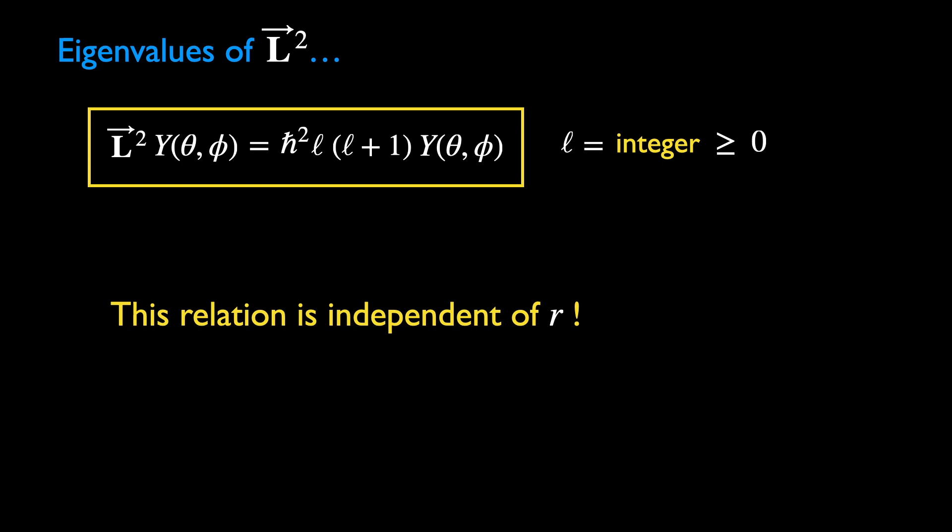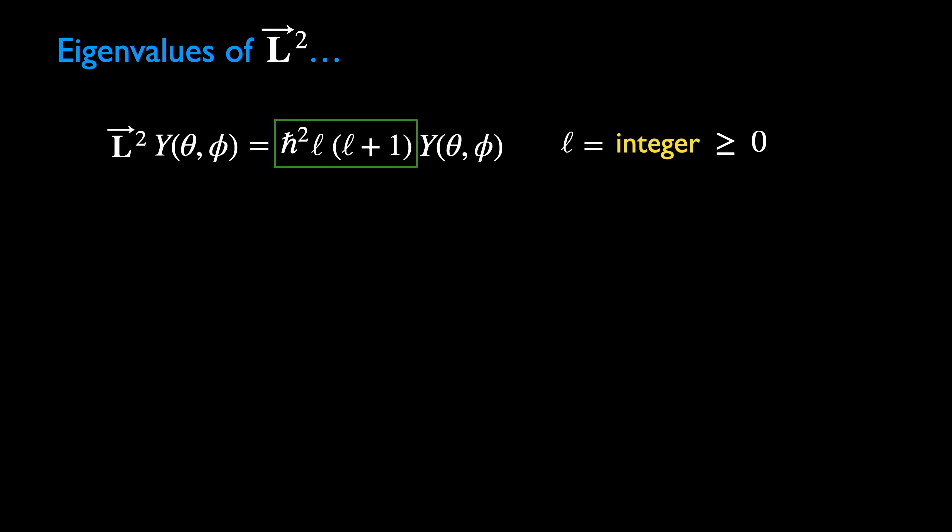And we end up with an equation that is completely independent of the radial coordinate r. This is an important point worth emphasizing, since both the operator L-square and the function Y only depend on the angular variables. This equation is exact, even though we have reached it by taking some limit with respect to the variable r. Thus we have obtained the eigenvalues of L-square before even solving its eigenfunctions Y.